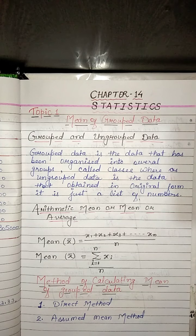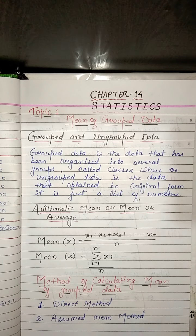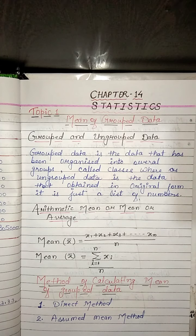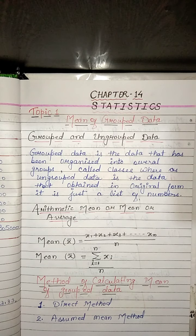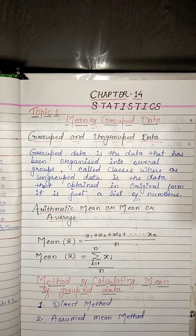The method to convert ungrouped data into grouped data: ungrouped data can be converted into grouped data by forming class intervals of equal width and allocating the frequencies to each class interval. Remember that observations falling on any upper class limit would be considered in the next class. For example, 6 students who obtained 60 marks would be considered in the class interval 60 to 75 and not in 45 to 60.